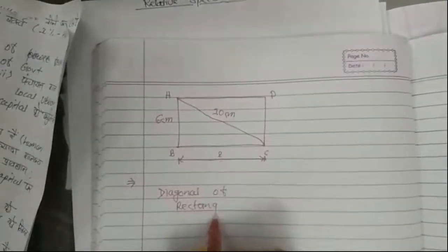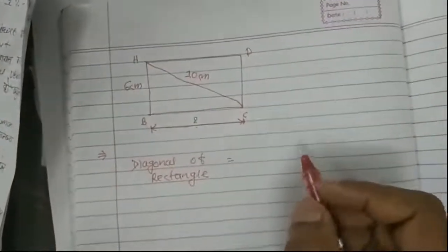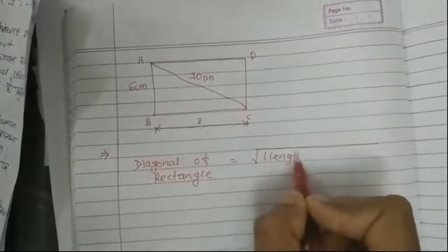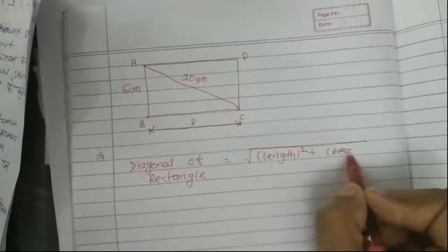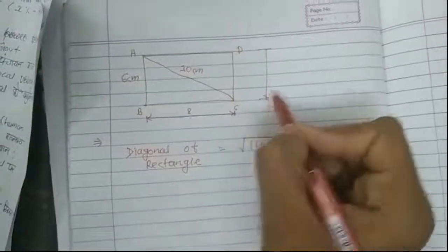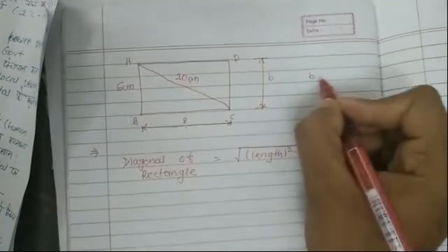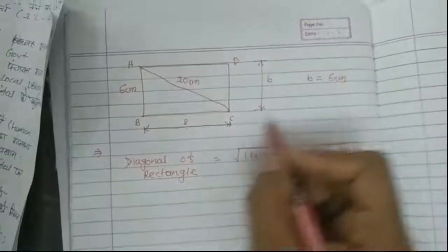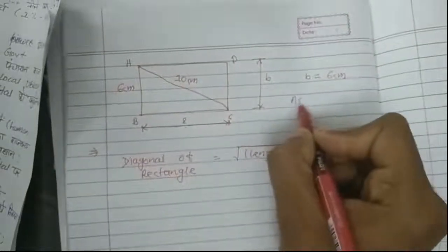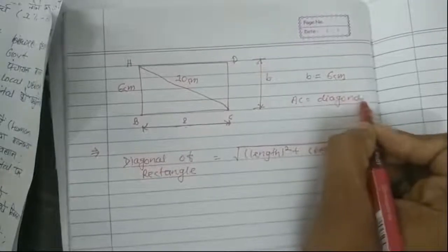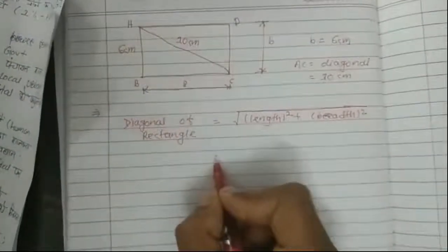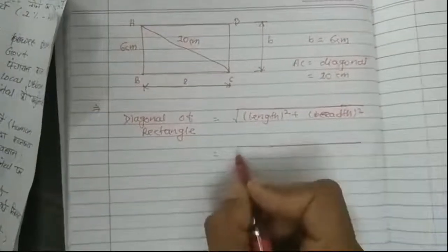You know that the formula for the diagonal of a rectangle is: length squared plus breadth squared. This is the breadth, given as 6 centimeters. This is the length, and AC is the diagonal of 10 centimeters. So what is the length? We don't know.